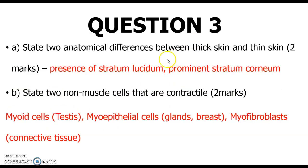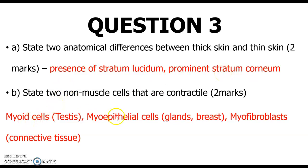There are the histological differences between thick and thin skin. Thick skin has the stratum lucidum and the stratum corneum. The non-muscle cells that are contractile include the myoepithelial cells and myofibroblasts.